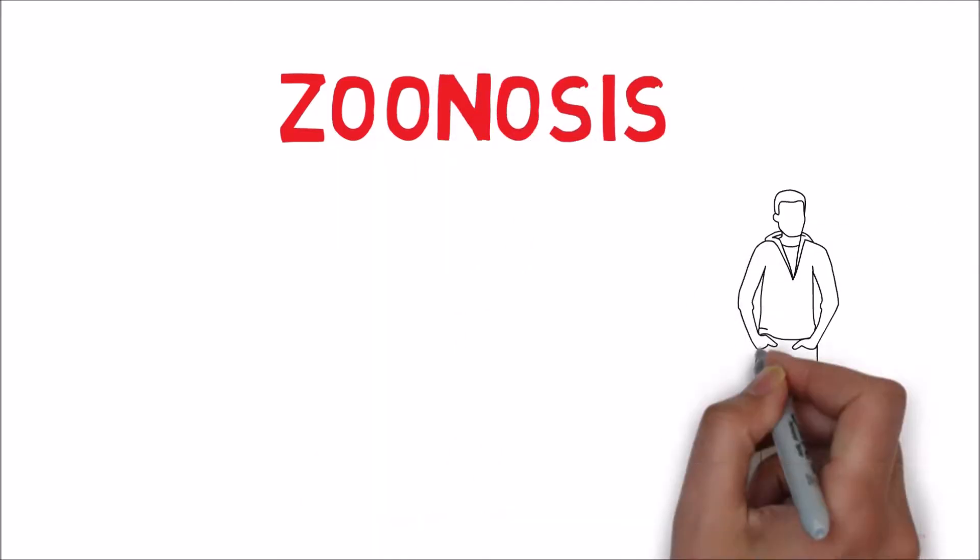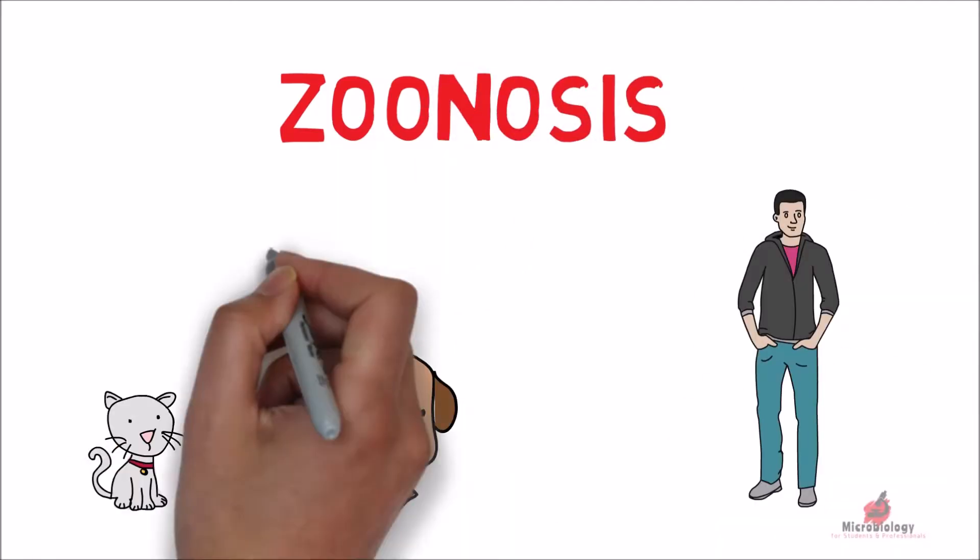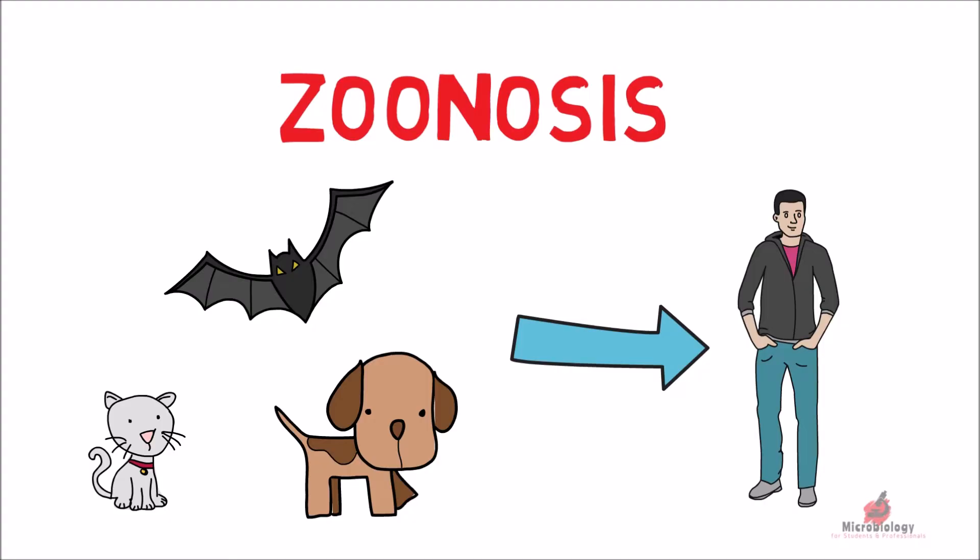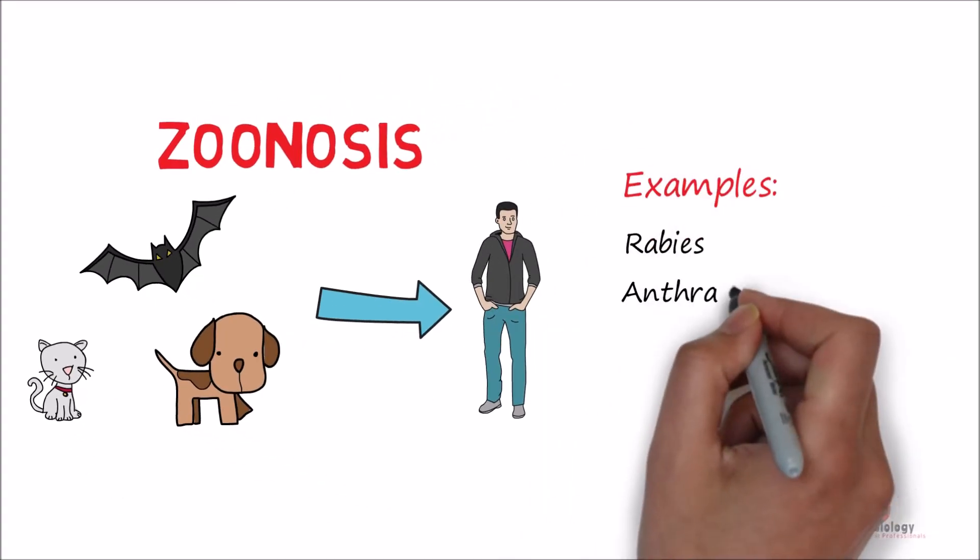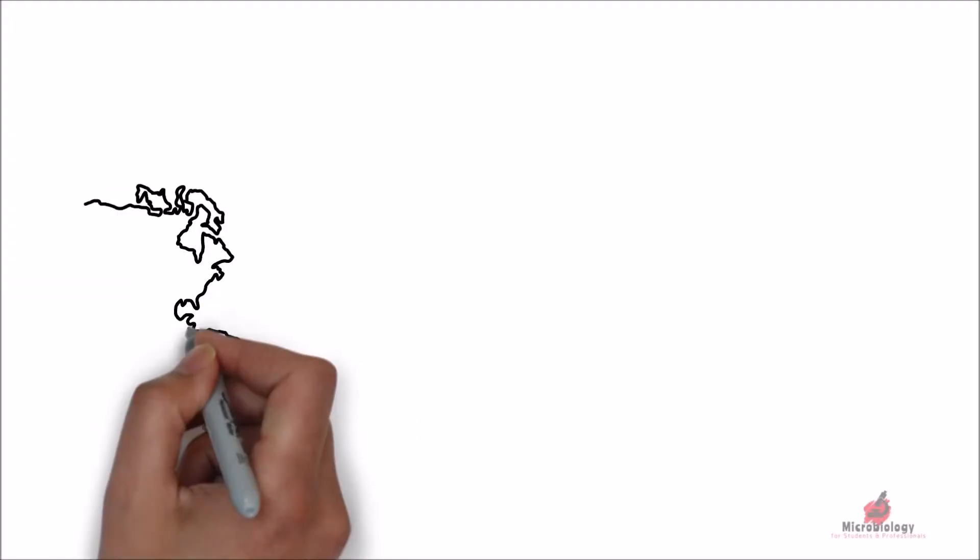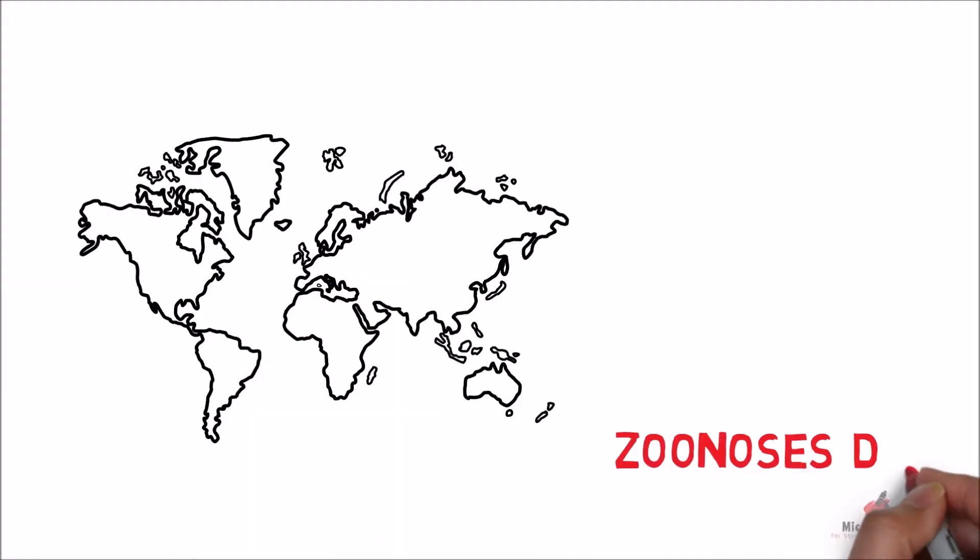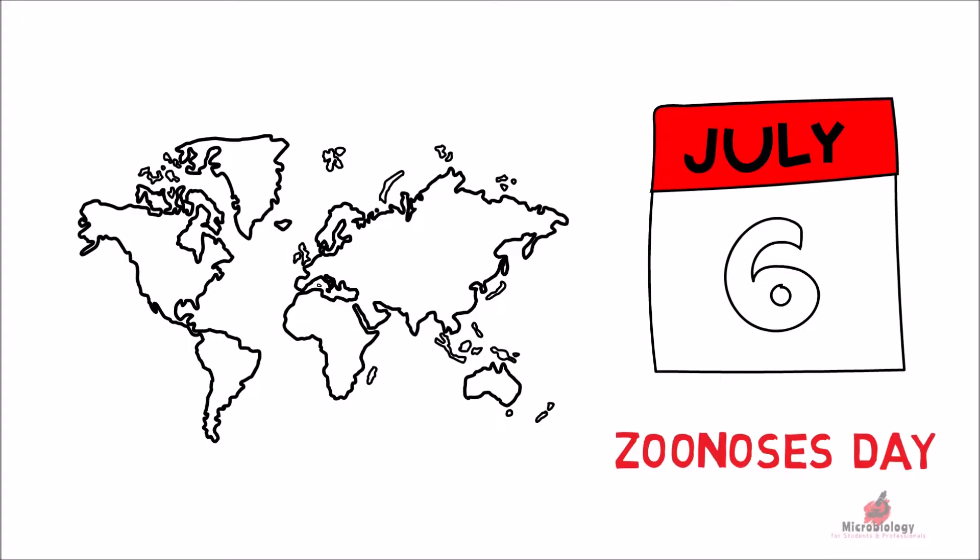Zoonosis is the name given to diseases which can be transmitted to human beings from an infected animal. Examples of zoonosis may include rabies, anthrax, plague, and salmonellosis. Worldwide, the Zoonoses Day is celebrated on 6th July every year.